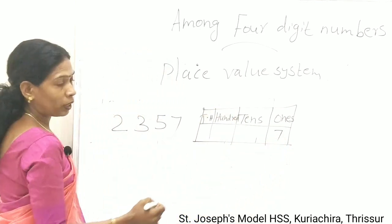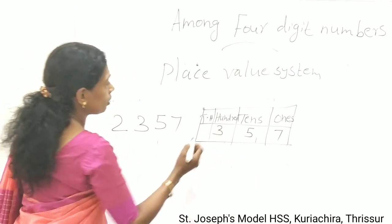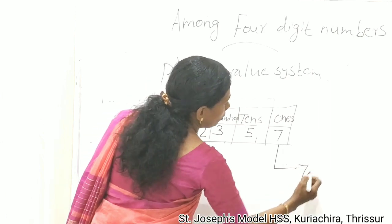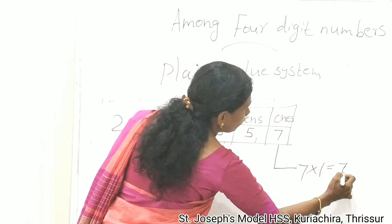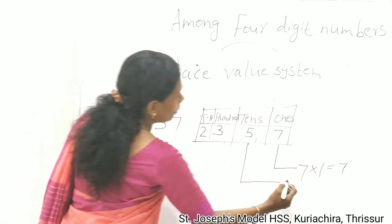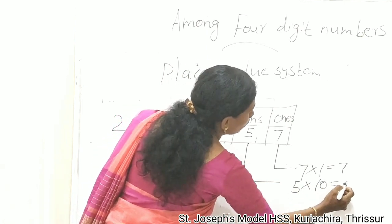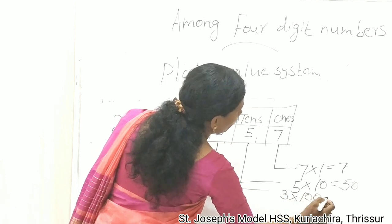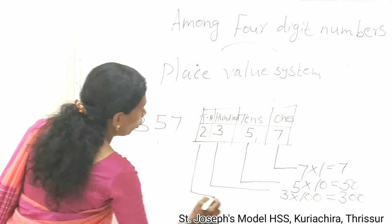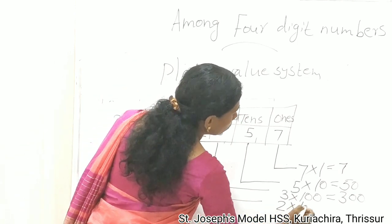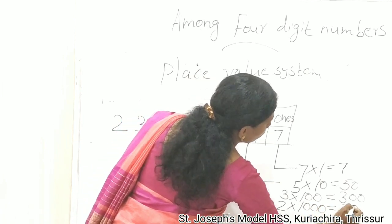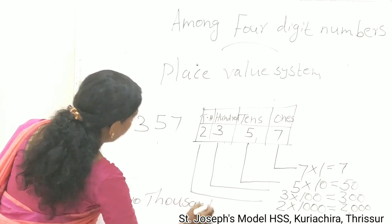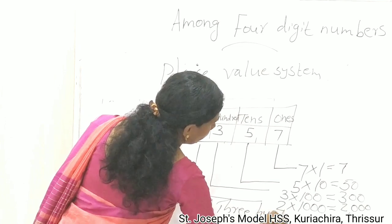For the 4 digit number 2357: 7 is in the ones place, 5 is in the tens place, 3 is in the hundreds place, and 2 is in the thousands place. The value of 7 is 7 × 1 = 7. The value of 5 is 5 × 10 = 50. The value of 3 is 3 × 100 = 300. The value of 2 is 2 × 1000 = 2000. So the number is 2357.